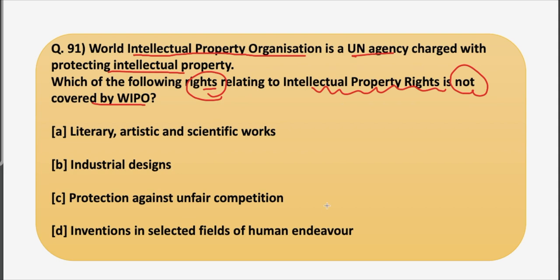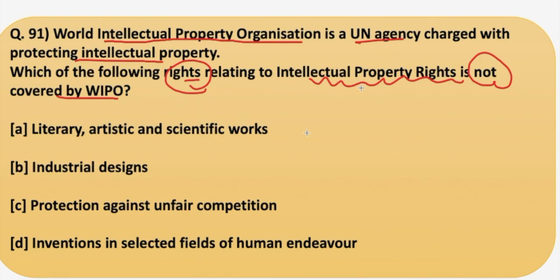IP is a category of property that includes intangible creations of the human intellect. There are many types of intellectual property like copyrights, trademarks, patents, and trade secrets. This is the intangible creation of the human intellect, as the word also suggests — intellectual property rights. Let's first understand the function of WIPO, that is the World Intellectual Property Organization, through an example, and then we will have a detailed discussion in the next slide.